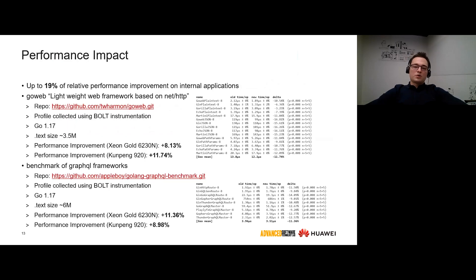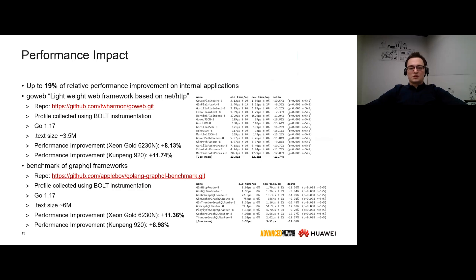Probably the most interesting part is the performance impact. Did we reach the desired performance improvement? The answer is yes. Our internal GoLang applications performance was improved by up to 19%. Applying Bolt on the GoWeb benchmark showed about 8% and 11% performance improvement on Xeon and Kunpeng CPUs respectively. For the GraphQL benchmark, the improvement is about 11% and 9% respectively.